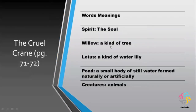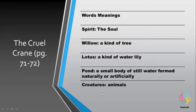Page number 71 to 72 — here are the word meanings. You have to underline these words on these pages. The first word is 'spirit' — spirit means soul. Then 'willow' — willow is a kind of tree. Then 'lotus' — it is a kind of tropical water lily. Then 'pond' — a small body of still water formed naturally or artificially. Then 'creatures' means animals.